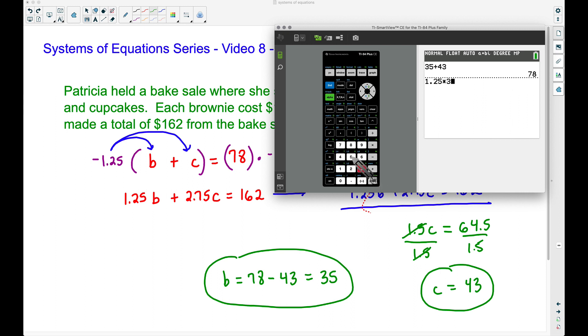So let's take $1.25 times the number of brownies, which we said was 35, and we can go ahead and press equals here, or you could keep on adding. But that number right there tells you how much she made off of just the brownies.